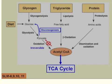From previous videos, you remember glucose goes through the glycolysis pathway and becomes pyruvate, and then pyruvate can go into the mitochondria and combine with coenzyme A to become acetyl-CoA. The same thing with proteins — through deamination, you can get acetyl-CoA.